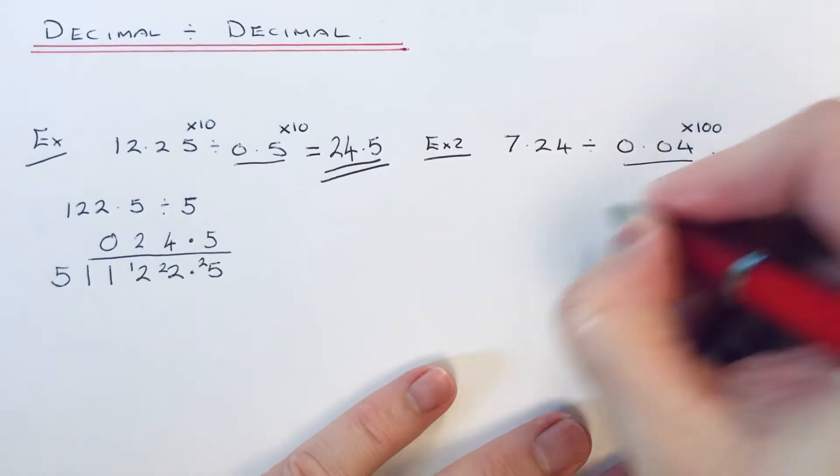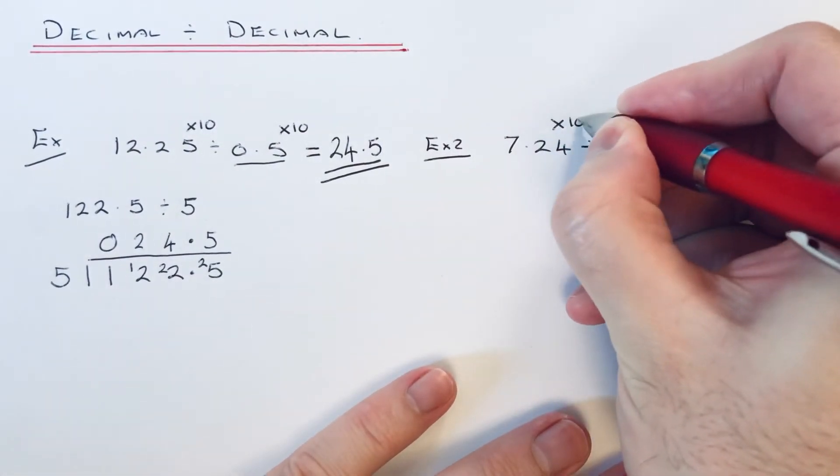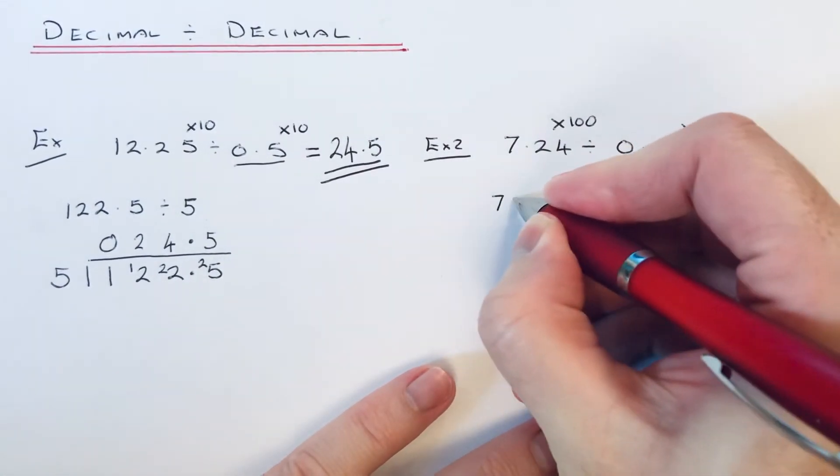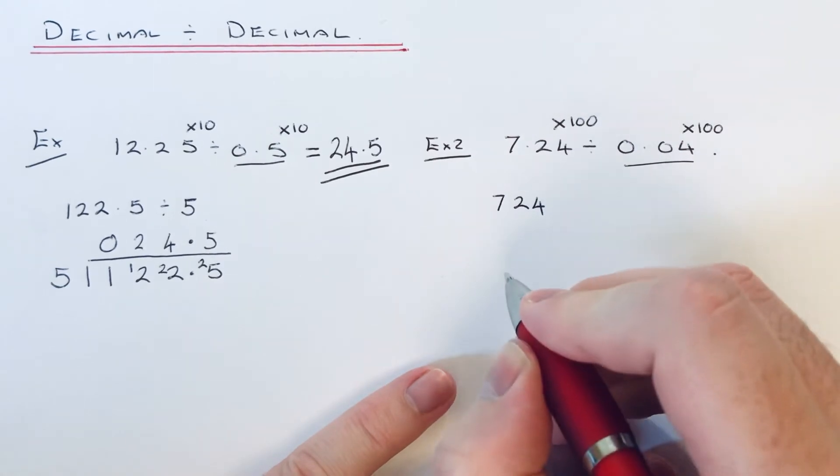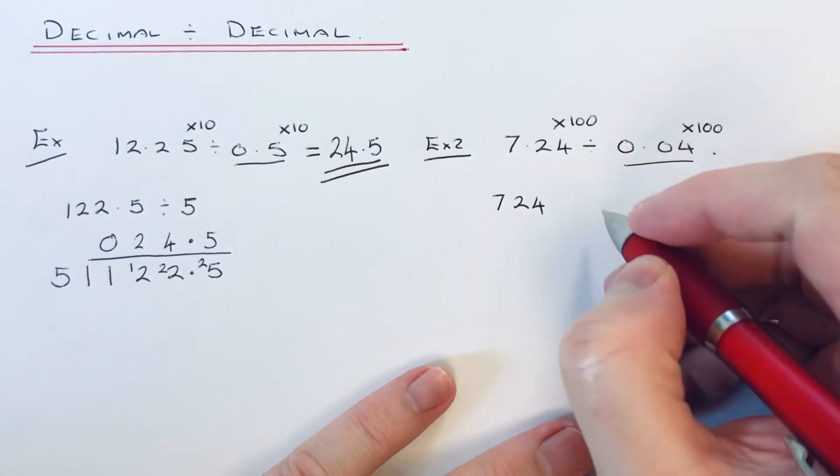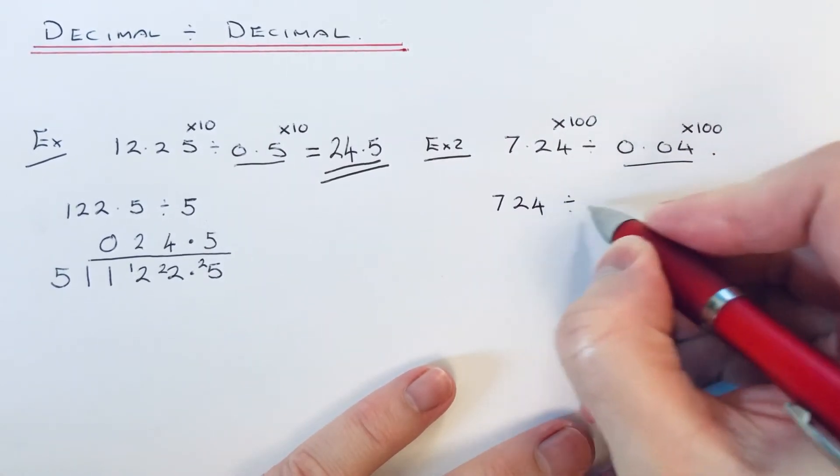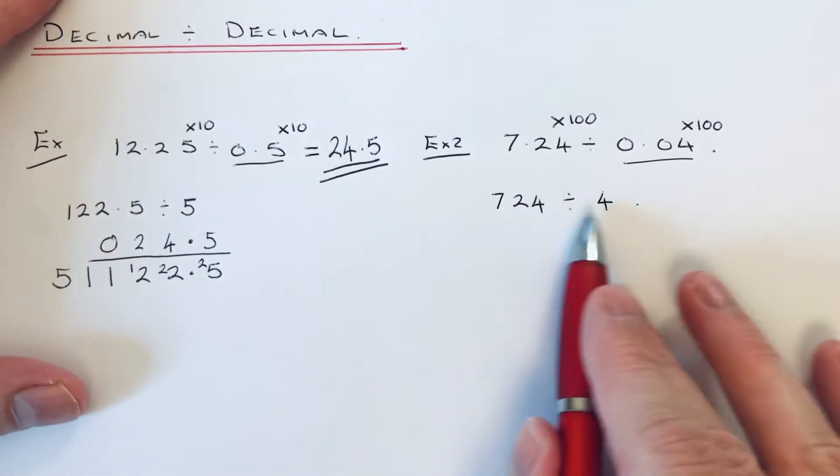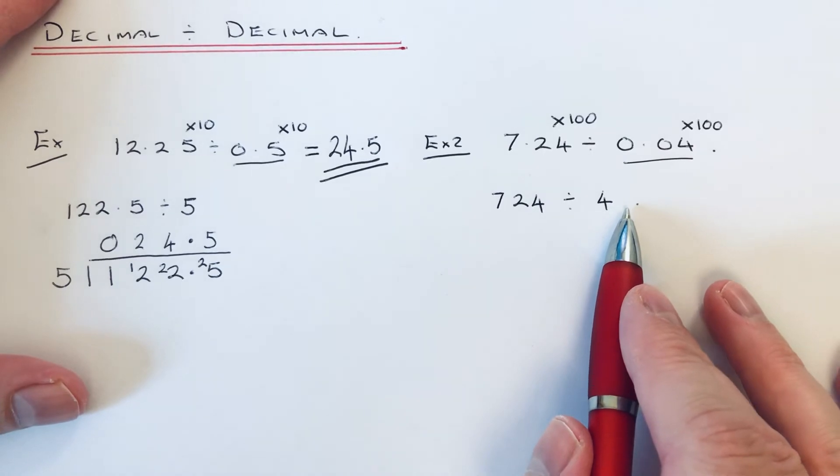So we multiply this number by 100 and our first number by 100. 7.24 times 100 is 724, and 0.04 times 100 is 4. So we just need to work out 724 divided by 4.